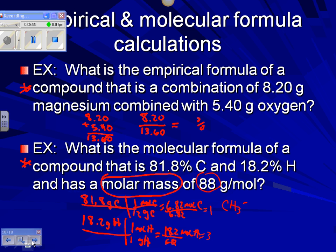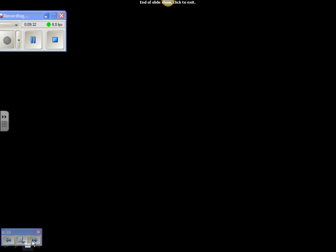The empirical formula CH3 weighs about 15 grams. The molecular formula weighs 88 grams, so 88 divided by 15 gives a ratio of roughly 6 — the molecular formula is six times bigger than the empirical formula. Multiplying through by 6 gives C6H18 as the molecular formula. Remember: find the empirical formula first, then figure out how much it weighs compared to the molecular formula mass. That's all you need to do.